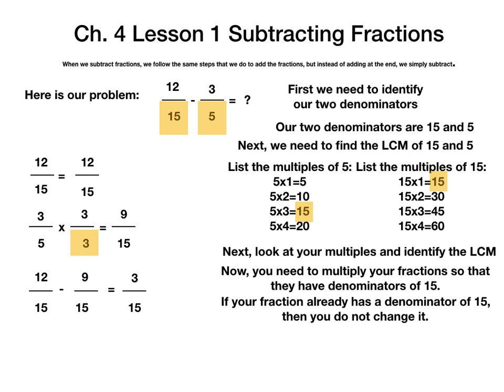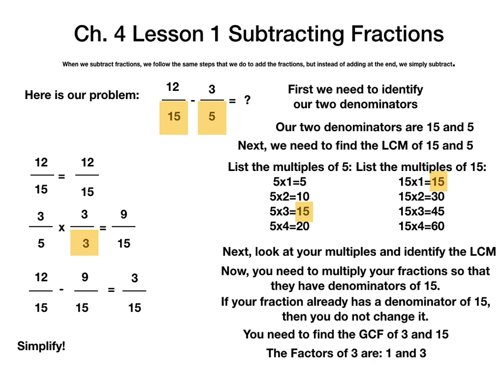Some of you are probably thinking you are done with your math — but no, 3 and 15 can both be reduced. We need to simplify our answer into the most reduced fraction we can. 3 and 15 can both be divided by some number. To figure out what that number is, you need to find the GCF, or greatest common factor, of 3 and 15. The factors of 3 are 1 and 3, and the factors of 15 are 1, 3, 5, and 15. They both share 1 and 3, so the greatest common factor is 3.